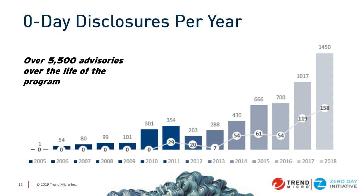Of the 1,450 published advisories, only 158 were zero-day disclosures — meaning either the vendor said they weren't fixing it and we published, or it had passed the 120-day disclosure deadline. That disclosure deadline is there to keep vendors on their toes and make sure they're not sweeping bugs under the rug. Over the history of the program, we've had over 5,500 advisories and awarded more than $20 million to independent researchers around the world.